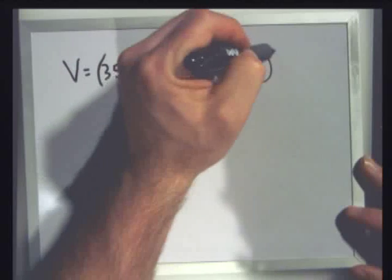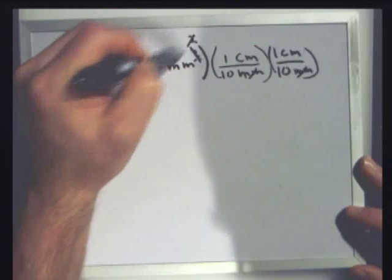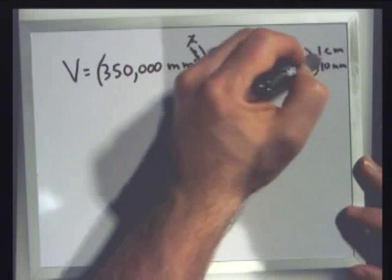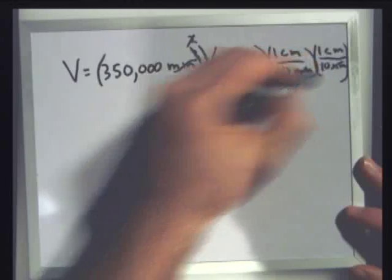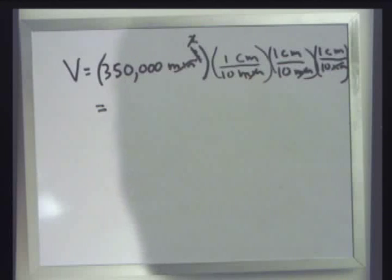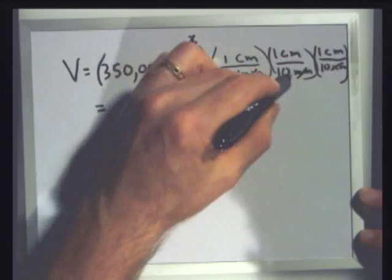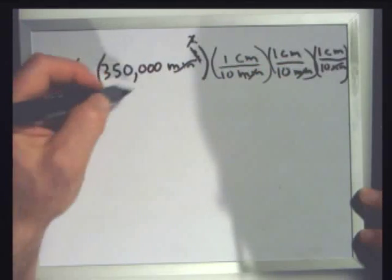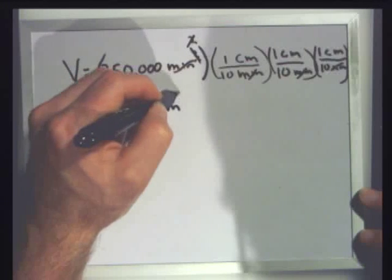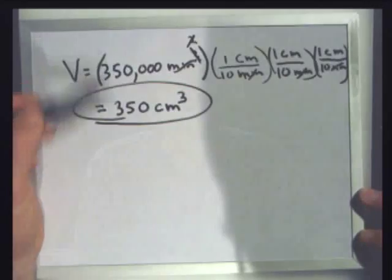1 centimeter per 10 millimeters — that gets rid of another one. I've got 1 millimeter left still, so 1 centimeter per 10 millimeters again. That gets rid of all the millimeters, and my answer will be centimeters times centimeters times centimeters — that's cubic centimeters. I wind up with 350,000 divided by 10, divided by 10, divided by 10, which gives me 350 cubic centimeters. So I wind up with what seems like a much smaller number.